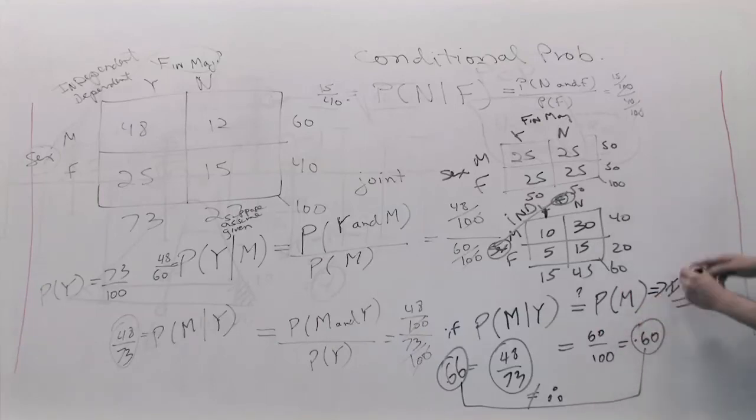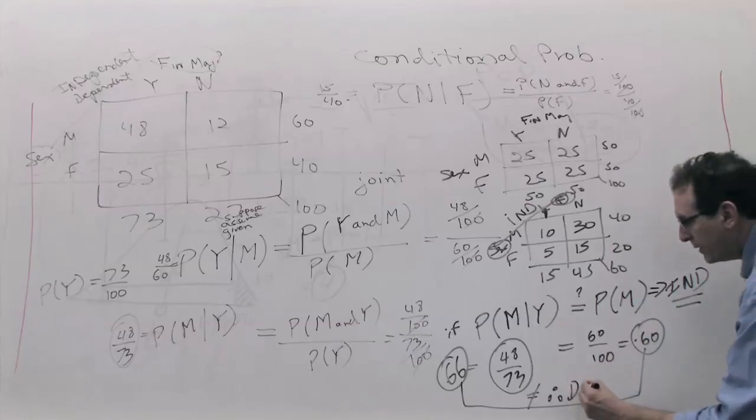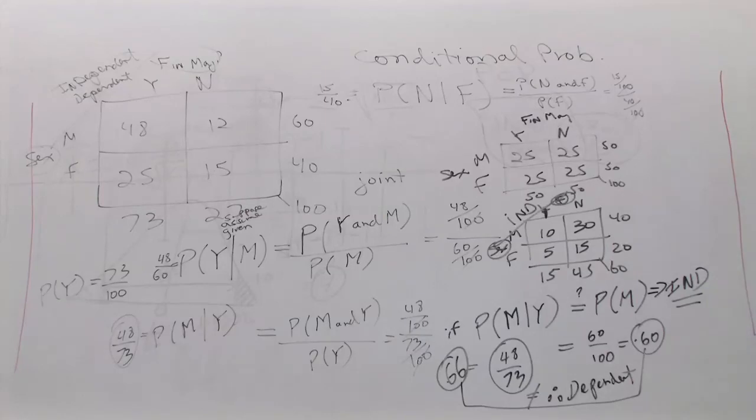Therefore, the answer is independent or dependent? Remember, if they're equal, that proves they're totally unrelated, totally separated, but if there's a lack of equality, what does that prove? That one number affects the other number, so therefore, the answer is dependent. Okay? Dependent.